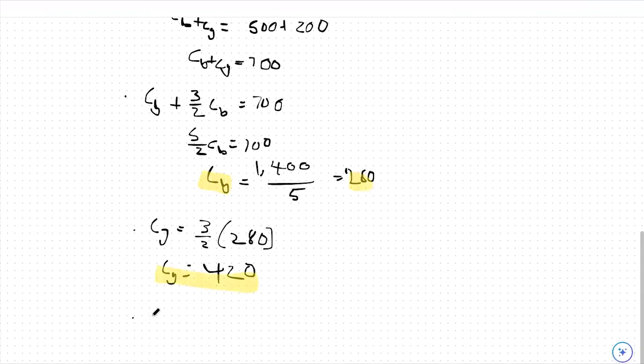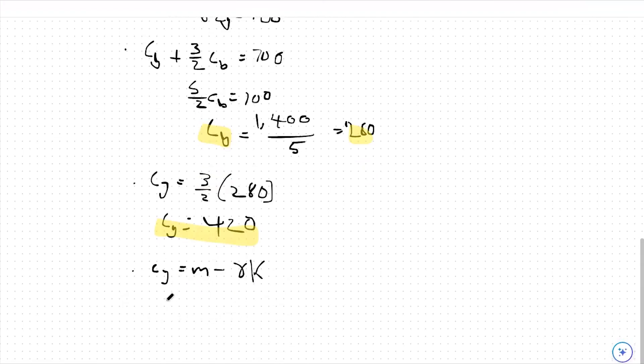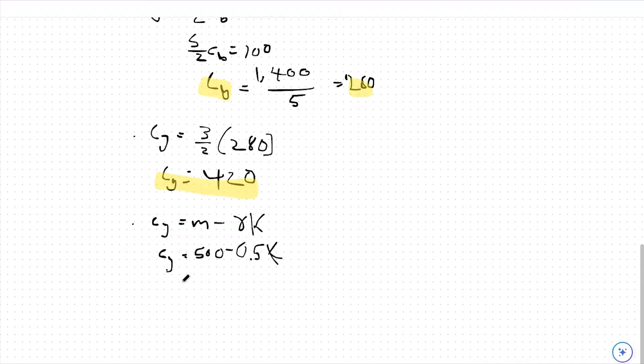Lastly, I can also find the amount of insurance. I can do so by using this formula here. CG is equal to my starting income minus the amount of insurance I buy, which would be K times gamma, or the premium for insurance. So CG will be equal to our starting income of 500 minus 0.5K. Since we found CG to be 420 in this case, we can plug that in as well.